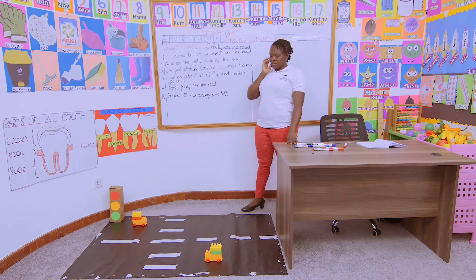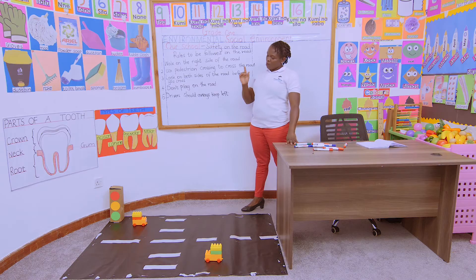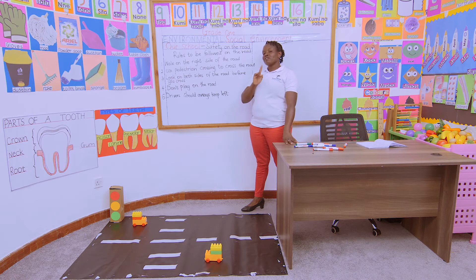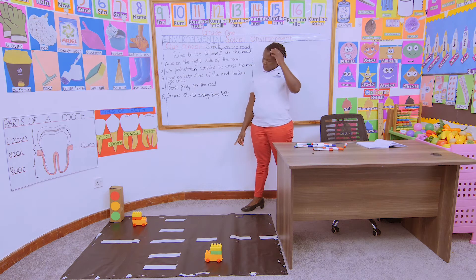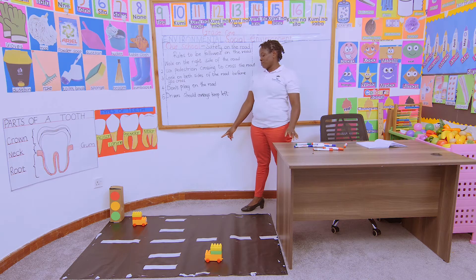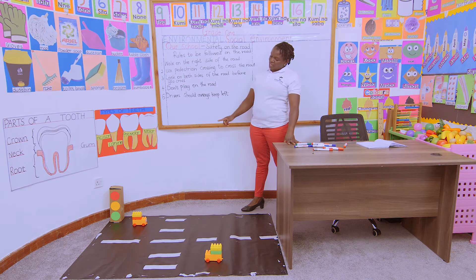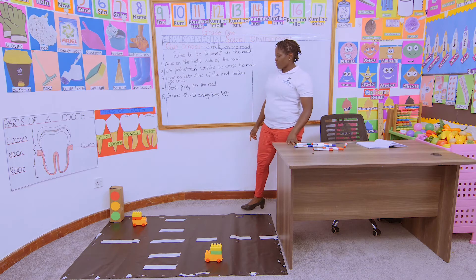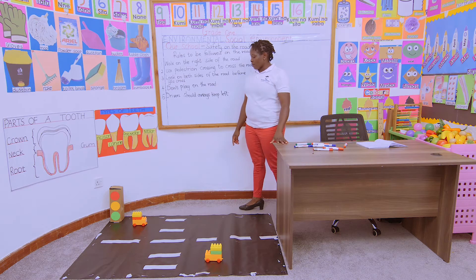I want three of us to come here. One is demonstrating — you behave like a police officer. Another one will be on the pedestrian crossing, and the other one will be the driver of that vehicle.